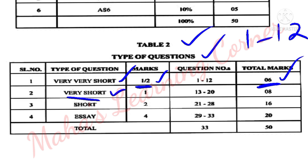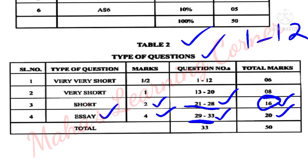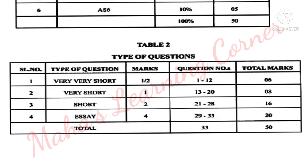Next are very short answer type questions carrying 1 mark each, followed by short answer type questions carrying 2 marks each, and long answer type questions carrying 4 marks each. Questions 29 to 33 are long answer questions — 5 questions times 4 marks equals 20 marks. Total questions: 33, total marks: 50.